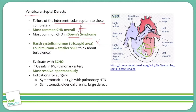On physical exam, we're going to hear a harsh holosystolic murmur in the tricuspid area. The left ventricle is a much higher pressure chamber compared to the left atrium, so comparing a VSD to an ASD, the volume of a VSD murmur will generally be louder because there's more pressure pushing the blood through the defect.